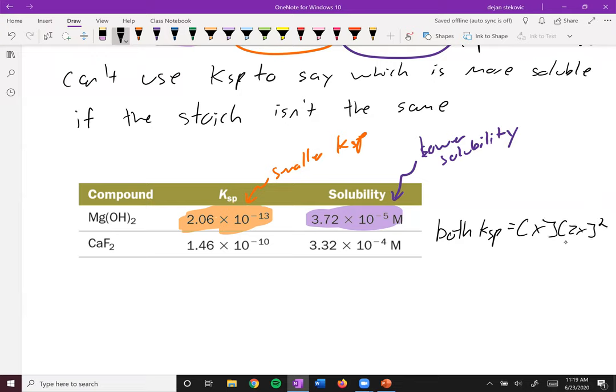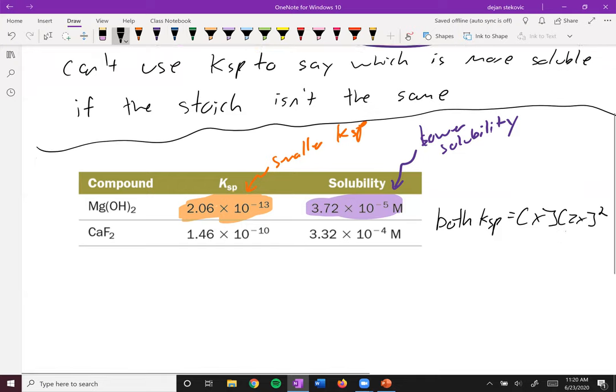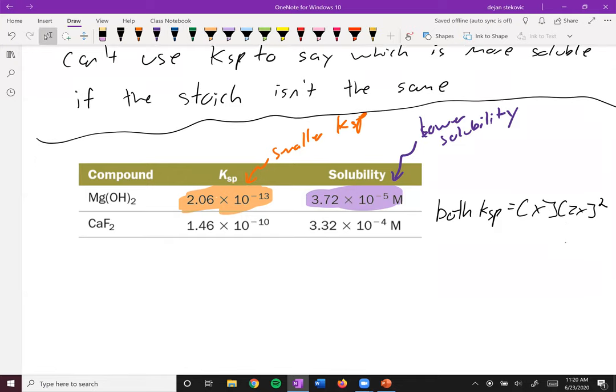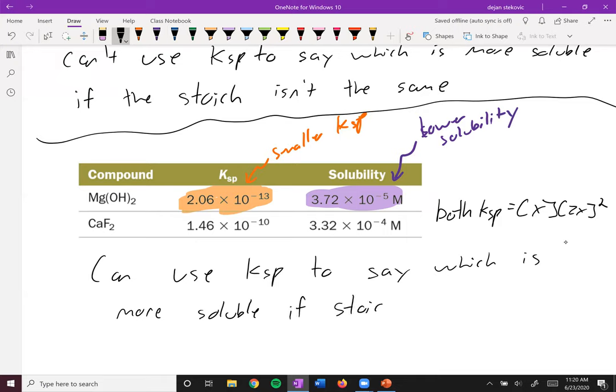So in this case, when the stoichiometry is the same, you can tell which one is going to be more soluble by just looking at the KSP. You can use KSP to say which is more soluble if the stoichiometry is the same.